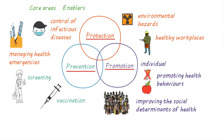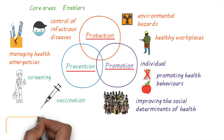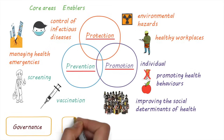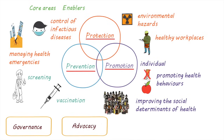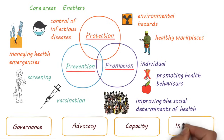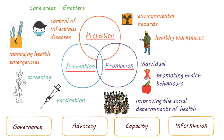To enable these core areas to function, there needs to be good governance; advocacy, to influence and obtain support and commitment for actions that support a health goal; capacity, having an adequate, well-trained, and supported public health workforce; and having accurate, timely information to support health actions such as relevant research, surveillance, monitoring, and evaluation.